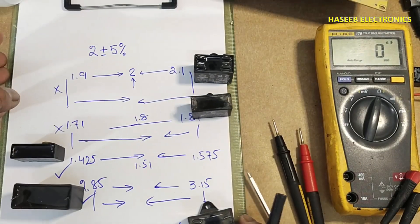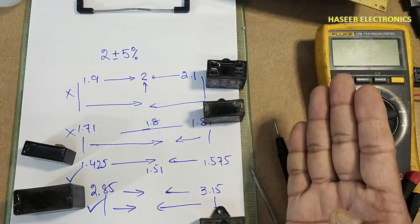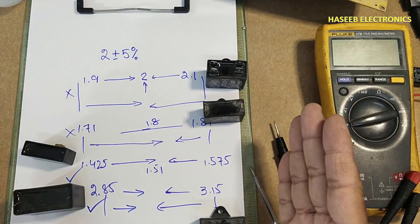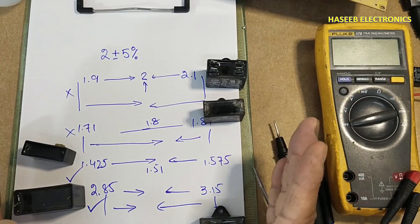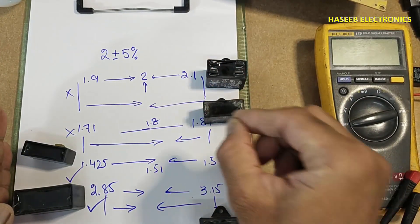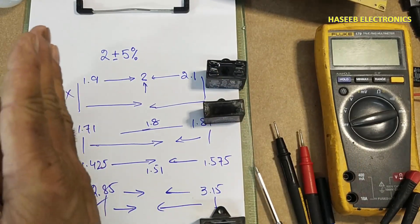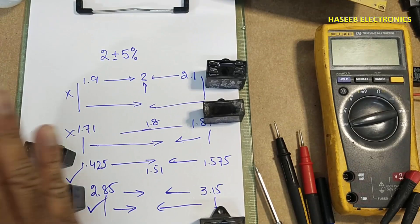If the capacitance value is out from upper limit or lower limit, that capacitor is to be considered bad. If it is slightly above the rated limit, that is acceptable, but less than lower limit is not acceptable.